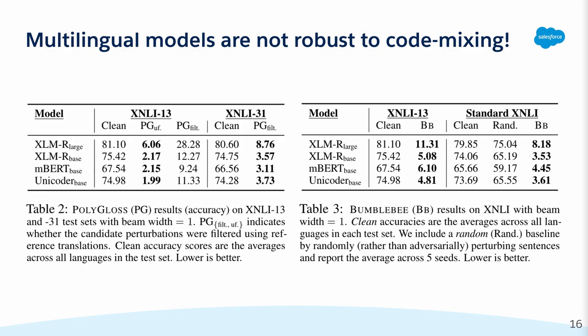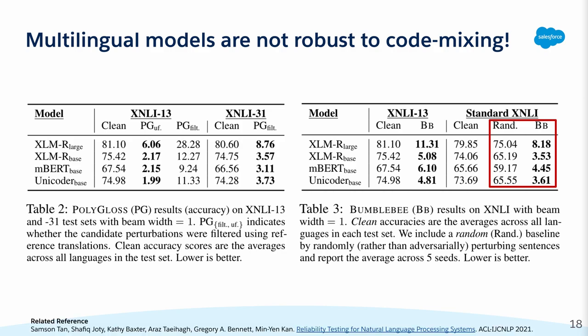We find that existing pre-trained multilingual models are not robust to code-mixed adversaries generated by Polygloss, as you can see from the tables here. One interesting finding is that these models are significantly more robust to the average-case perturbations represented by the random baseline than the worst-case perturbations represented by the adversaries generated by Bumblebee. I go into more detail about worst-case and average-case test performance under real-world variation in another recently accepted paper, which I have included below.